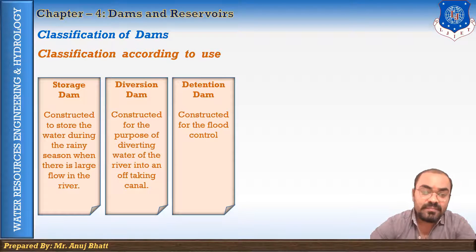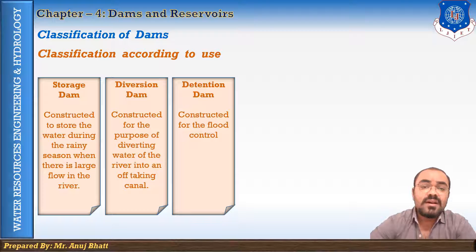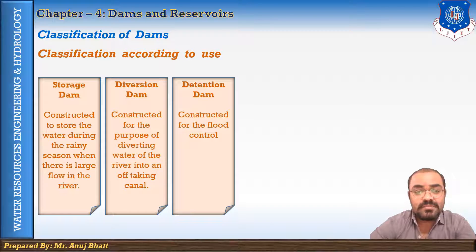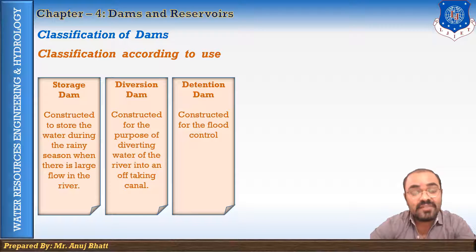The third is the detention dam. Detention dams are constructed for flood control. A detention dam retards the flow of water in the river on its downstream during floods by storing some flood water. The water retained in the reservoir is then released gradually at a controlled rate, decreasing the intensity of the flood.